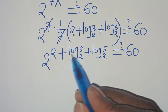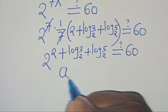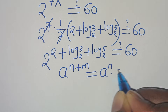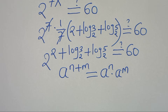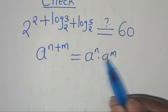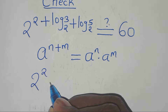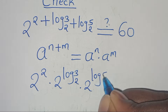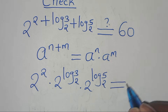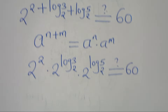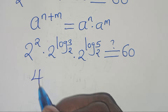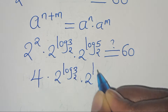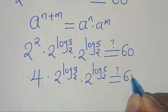Now 2 to the power of 2 plus log 3 to base 2 plus log 5 to base 2 is in the form of a to the power of n plus m, which we can express as a to the power of n times a to the power of m. Applying this exponent property, we have 2 squared times 2 to the power of log 3 to base 2, times 2 to the power of log 5 to base 2. This should give us a value of 60.